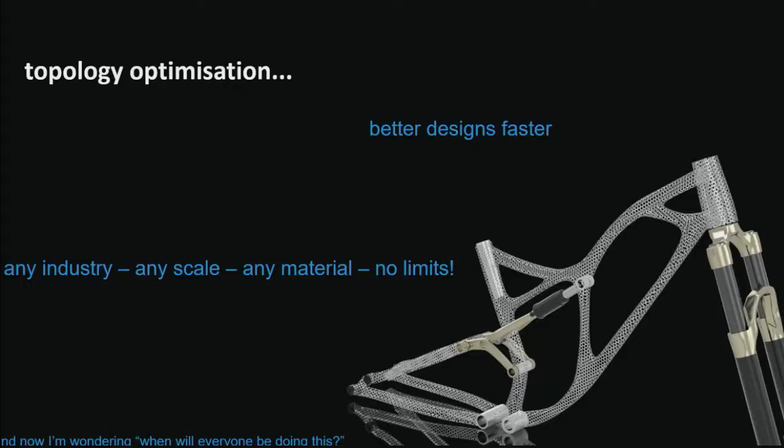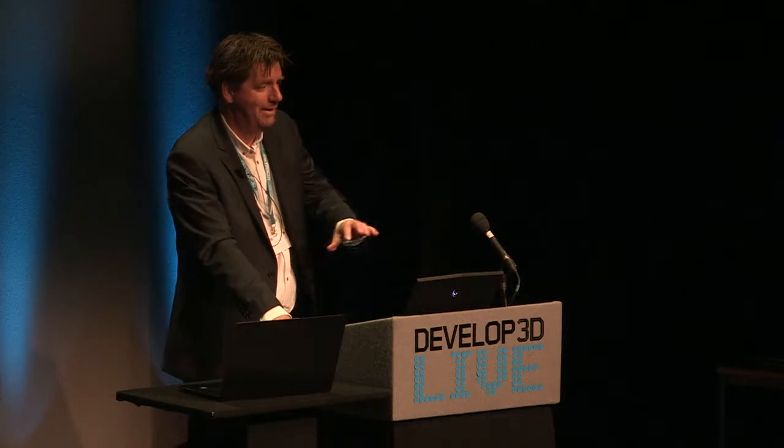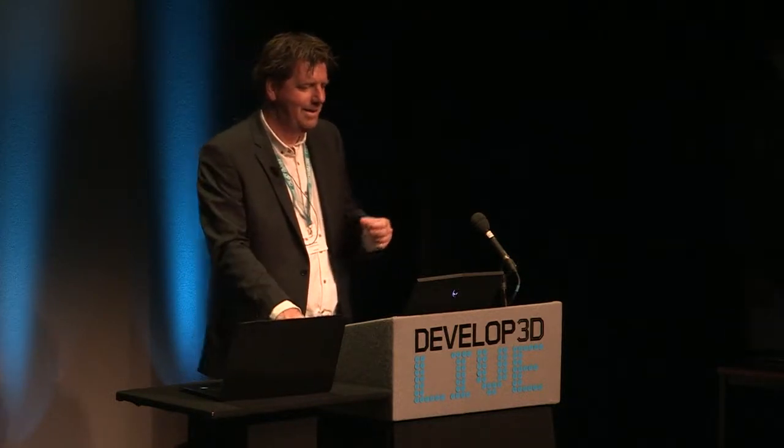That's pretty much the end. What is topology optimisation to me? It's just better designs faster. I've been hearing people say today it's only for automotive or only for standard stuff — no, it's for anything: any industry, any scale, any material, there are no limits. All I'm left wondering now is when will everyone be doing it? Thank you.